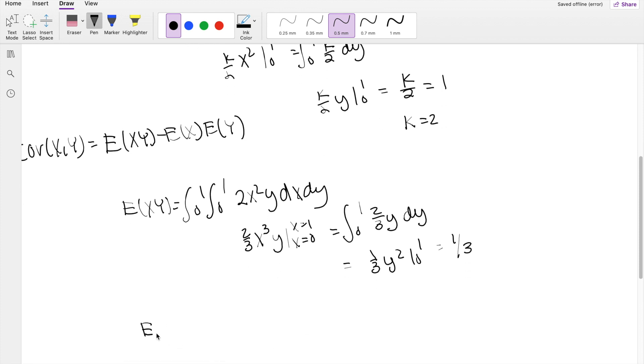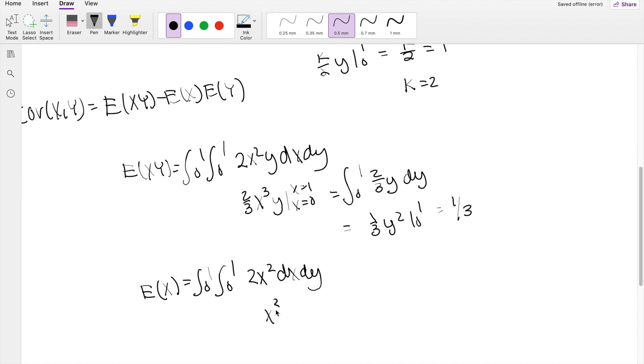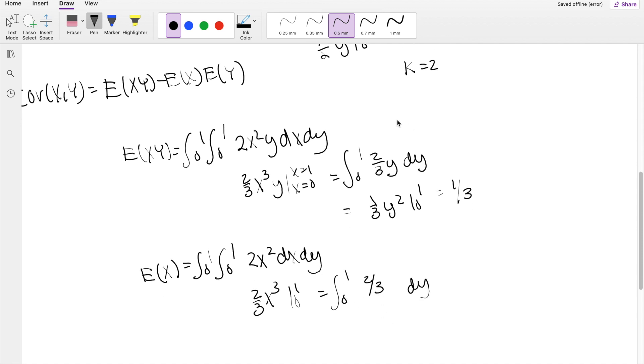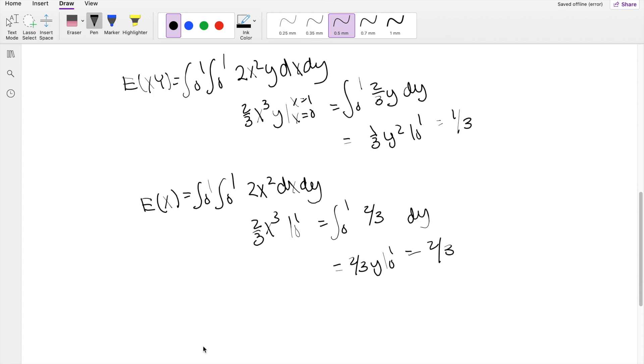How about for expectation of x? Well, the range is going to be the same, or the interval is still going to be the same. But instead of multiplying by xy, you're going to just multiply it by x, dx dy. Taking the integration in terms of x, you get x cubed, 2 thirds, going from 0 to 1. This is equal to 0 to 1 dy for 2 thirds. Then this is just equal to 2 thirds y, integrating from 0 to 1. So this is equal to 2 thirds.